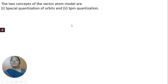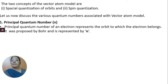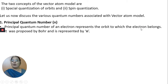We know the basic concepts of the vector atom model of spatial quantization of orbits and spin quantization. Let us see the different quantum numbers associated with this model. The first quantum number is called the principal quantum number. This principal quantum number of an electron represents the orbit to which the electron belongs. It was proposed by Bohr and is represented as n.